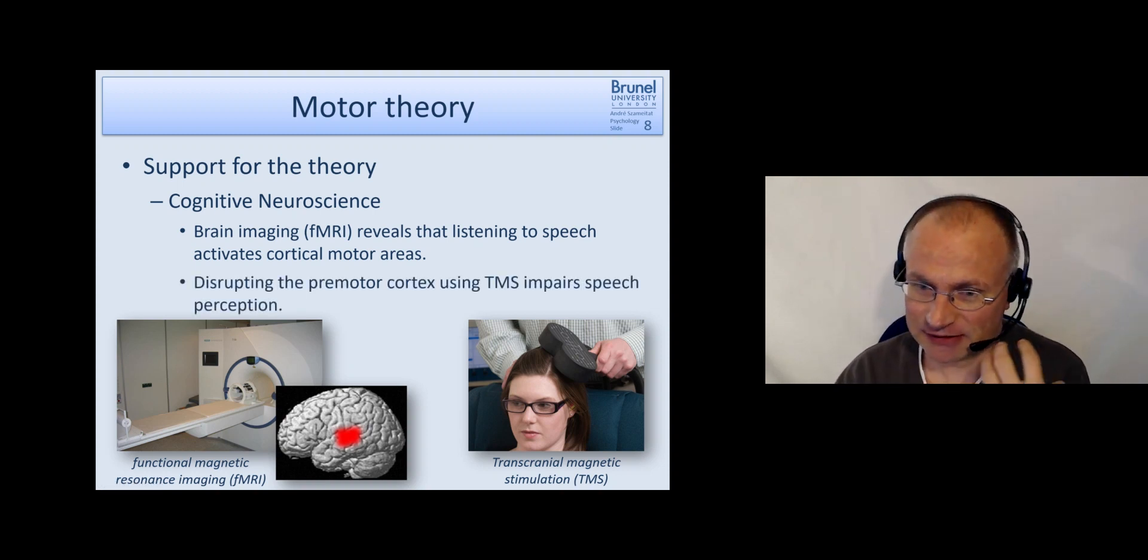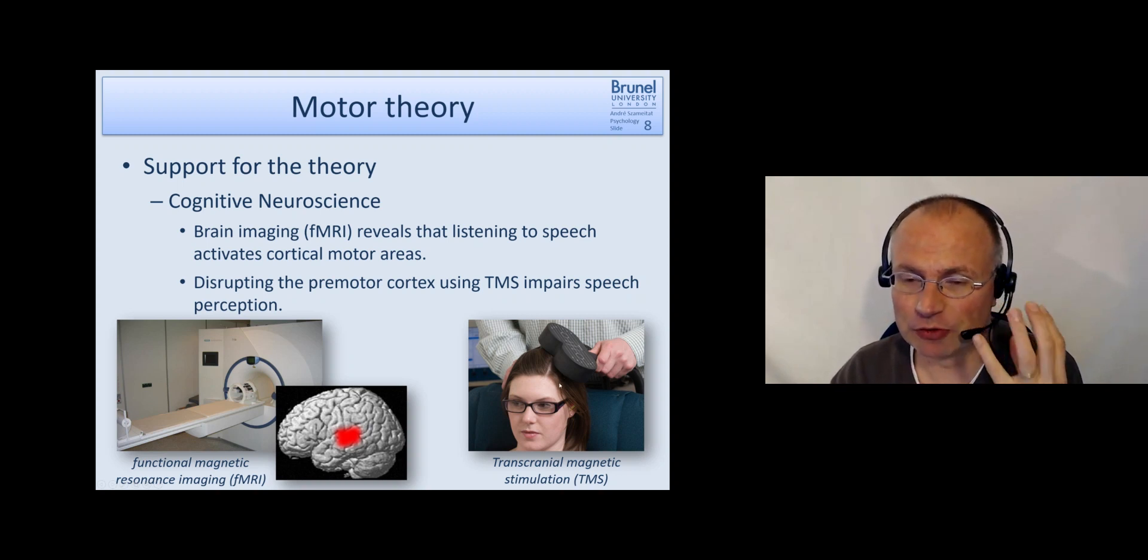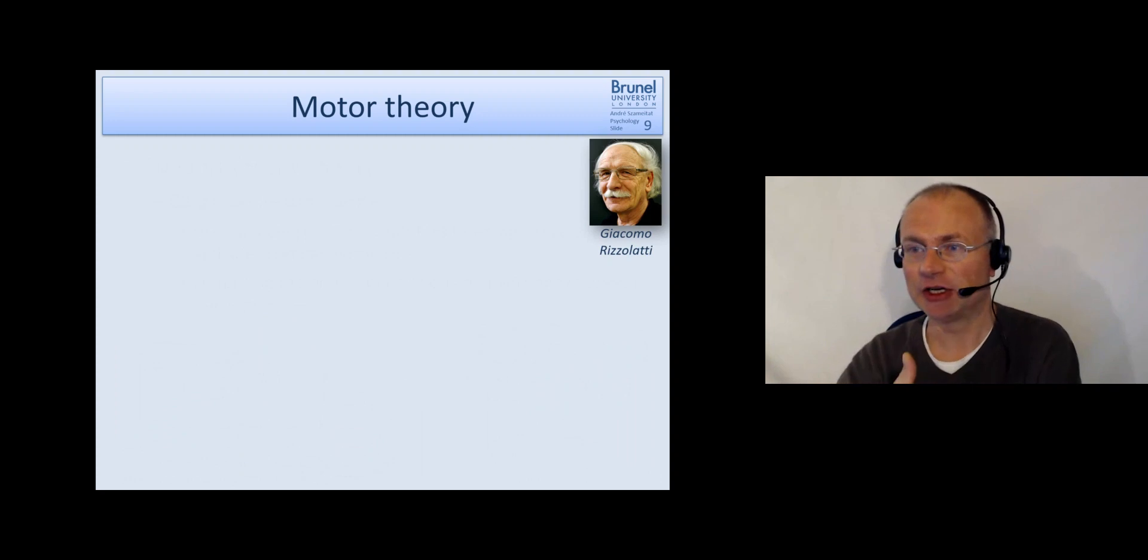And the other one is that when we use TMS, transcranial magnetic stimulation, which uses strong magnetic pulses to briefly interrupt the proper functional processing in the brain areas. And we use that over the pre-motor cortex, so a motor area, then this actually impairs the perception of speech. So when we disrupt motor cortices or motor areas, we impair speech perception. This is strong evidence for the motor theory of speech perception. That the motor areas at least play a role in speech perception.